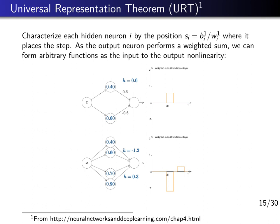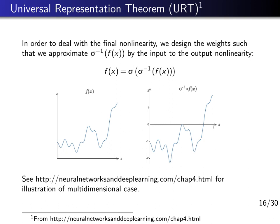Using two neurons, we can build a step up and a step down, forming a hat function. Using four neurons, we can build a hat down and a hat up, or any sequence of hat functions. With more neurons, you can arbitrarily approximate any smooth function on a bounded set using sufficiently many such step functions — requiring two neurons to represent each hat function.